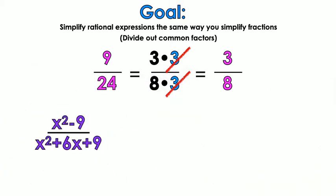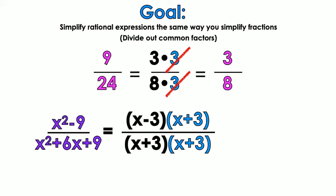So if I have a rational expression like x squared minus 9 over x squared plus 6x plus 9, what I'm going to do is factor the top. x squared minus 9 is a difference of two squares, so that's going to be x minus 3 times x plus 3. On the bottom, I need factors of 9 that add to give me 6, which would be 3 and 3, so I get x plus 3 times x plus 3. I just rewrote the problem in its factored form, which allows me to cross out the x plus 3s, giving me x minus 3 over x plus 3.